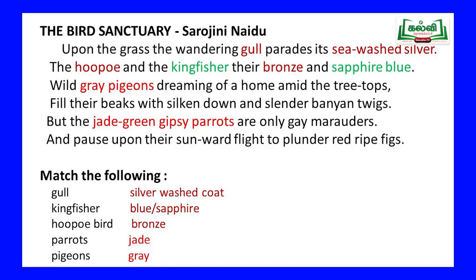The poem gives clues in red: 'Upon the grass, the wandering gull parades its sea-washed silver. The hoopoe and the kingfisher, their bronze and sapphire blue. Wild grey pigeons, dreaming of a home amid the tree tops, fill their beaks with silken down and slender banyan twigs. But the jade green gypsy parrots are only gay marauders.' You match the birds with their colours. The first one is gull — from 'sea-washed silver,' the answer is silver-washed coat, matched with the gull.